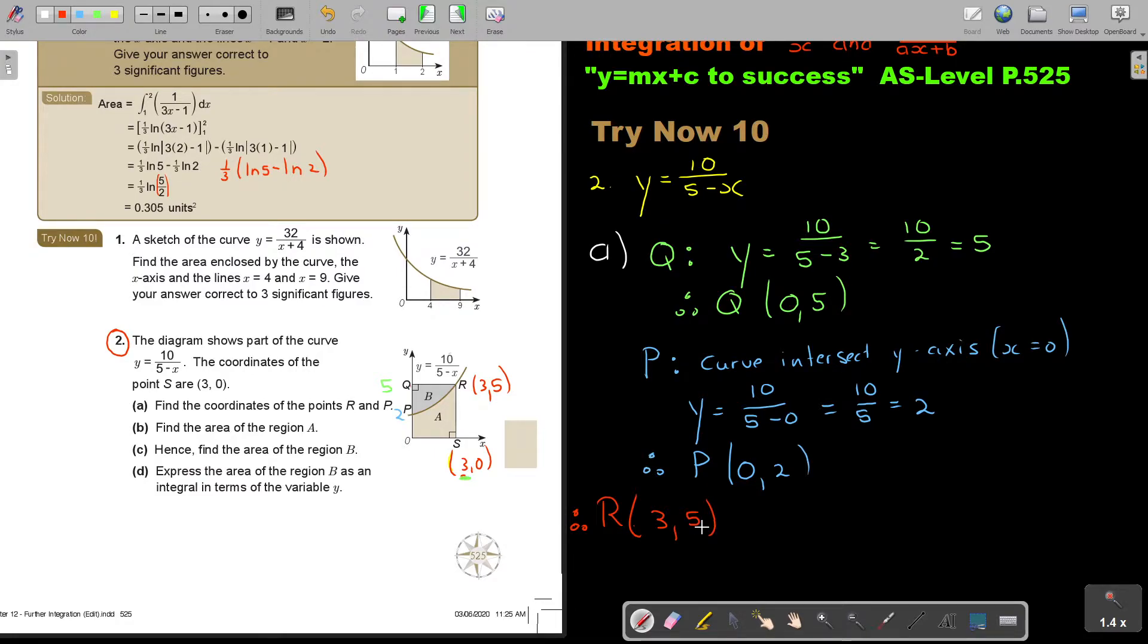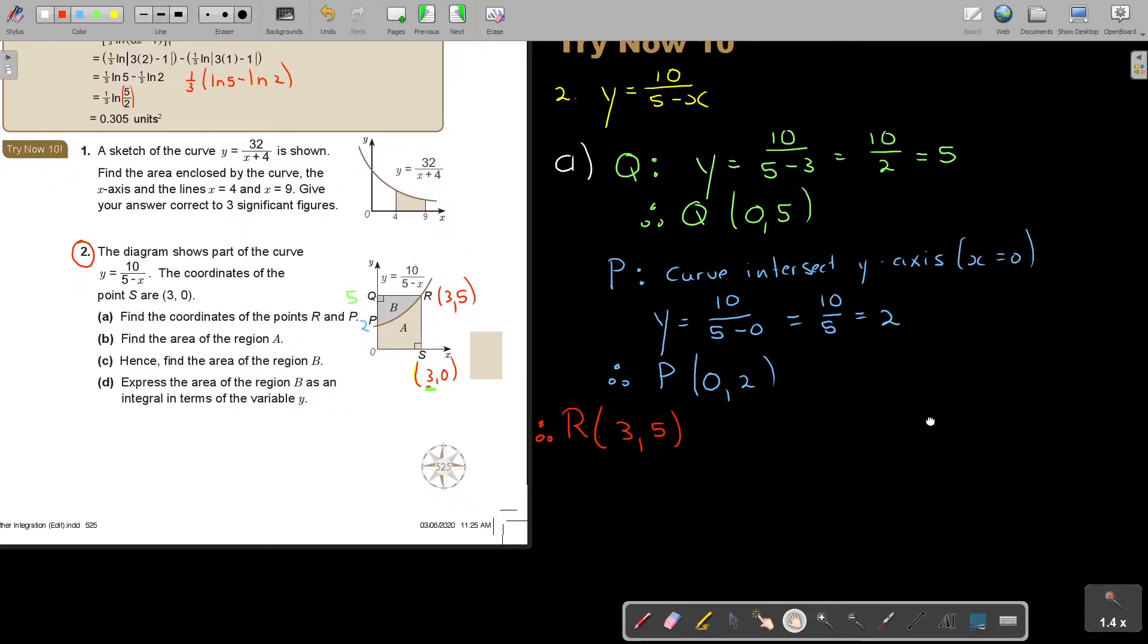And that is my answer. Okay. So, I have P, and I have Q in the process, and it's, but P, I have, and R, I have. Okay. That was number A. Let's go to number B.